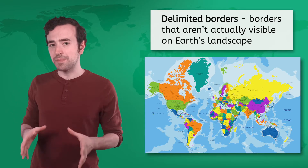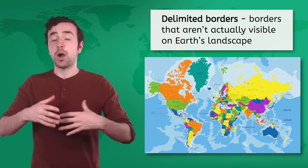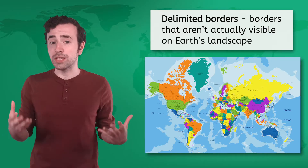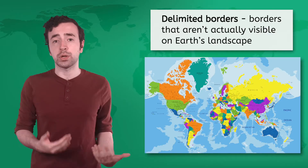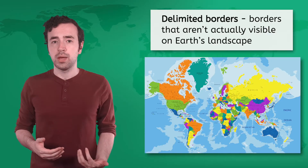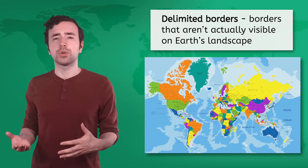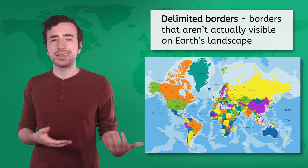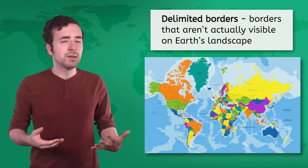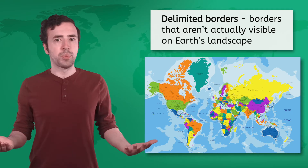While these borders can be physically seen, most borders are delimited, meaning they aren't actually visible on the Earth's landscape. So if most borders are just lines on maps, what's the point of them?